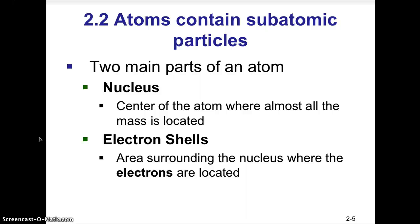Atomic structure: atoms contain subatomic particles. The two basic parts of an atom are the nucleus — the center of the atom where almost all the mass is located — and the electron shells surrounding it. To picture an atom's scale: imagine a large pro football stadium; a pinhead placed at the 50-yard line would represent the nucleus, and the radius to the stadium walls would represent the electron shell region.